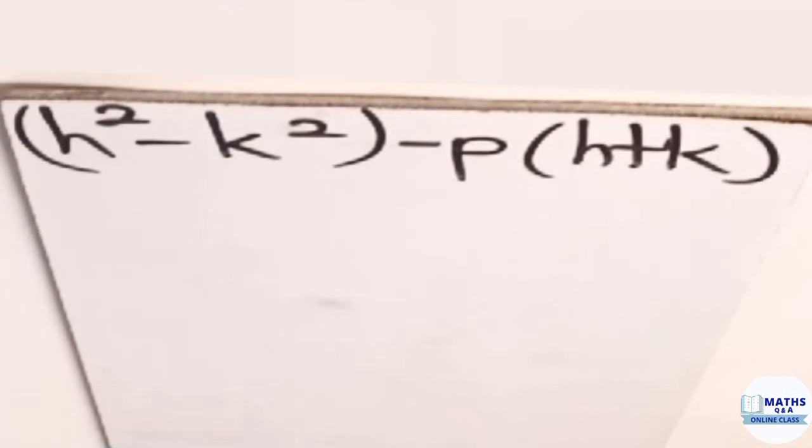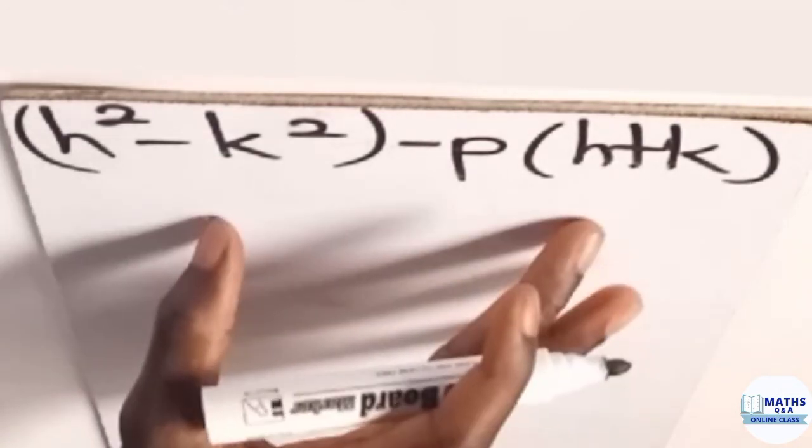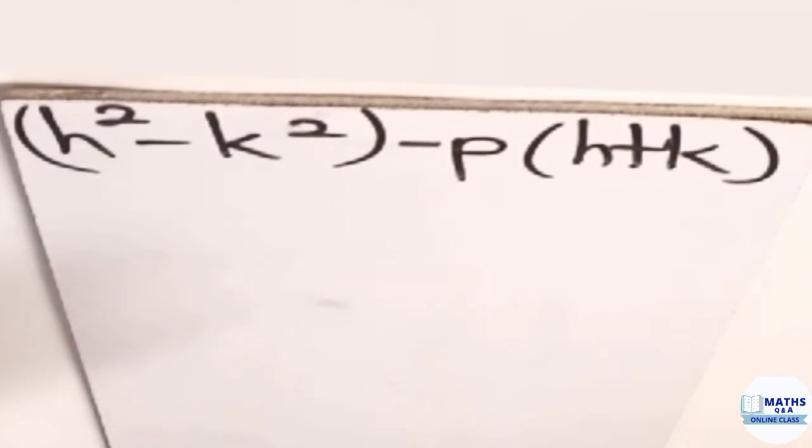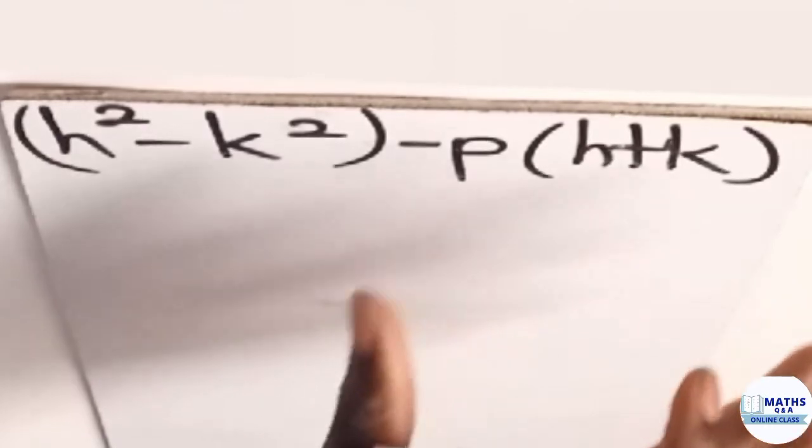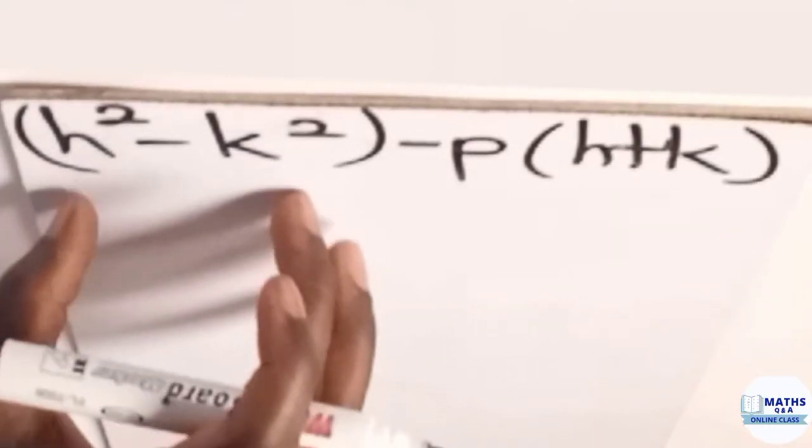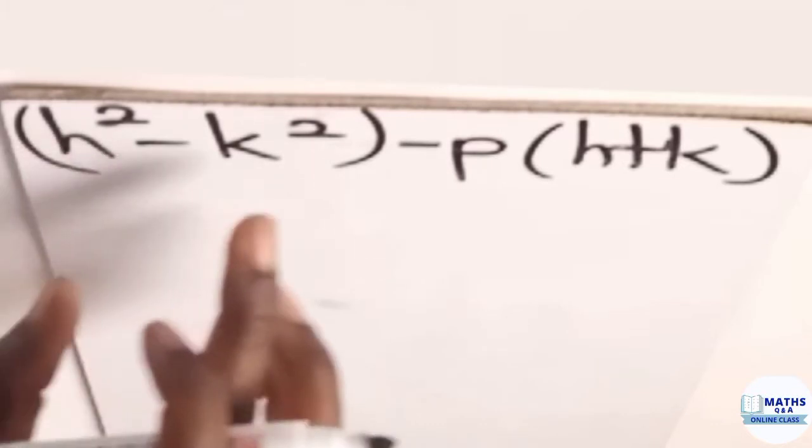So if we can factorize this algebraic expression, what you have to take note is that the p multiplying h plus k here has already been factorized. So this one, we won't touch it. Our major focus will be on this one. So we have h square minus k square here. That is what we'll be focusing on.